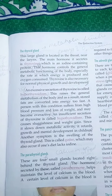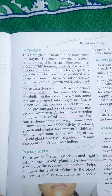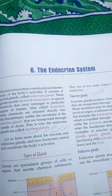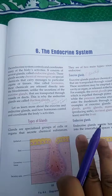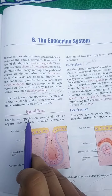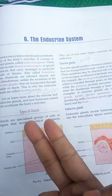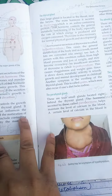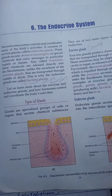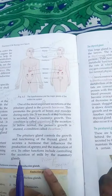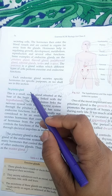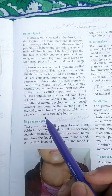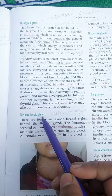Good morning students. Welcome back in the next video of bio. We have started Chapter number 6, the endocrine system. In the previous topics, we studied about the types of glands — endocrine glands and exocrine glands. Then we started about the hormonal system and discussed about the pituitary gland, the thyroid gland, and the parathyroid glands.